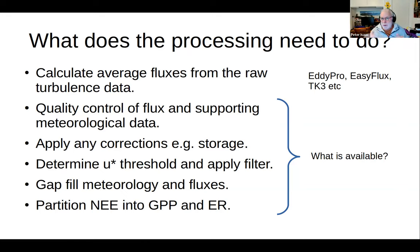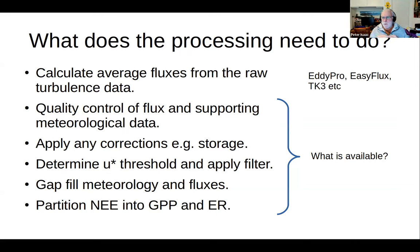We've got to apply corrections — storage of heat in the layer above heat flux plates, storage of CO2 in the canopy. Then we've got to determine a U-star threshold and apply that filter. We're using U-star as a proxy for turbulence — when friction velocity is above a certain threshold, the air is sufficiently mixed between instruments and the surface. We've then got to gap-fill meteorology and fluxes, because if we want daily, weekly, monthly, or annual totals, we need gap-filled data. Those are the basic steps in the processing.